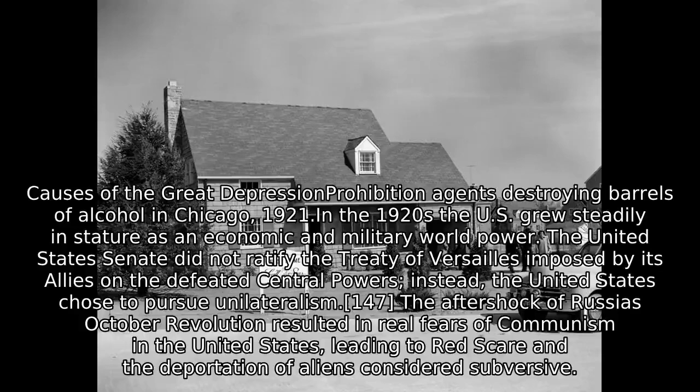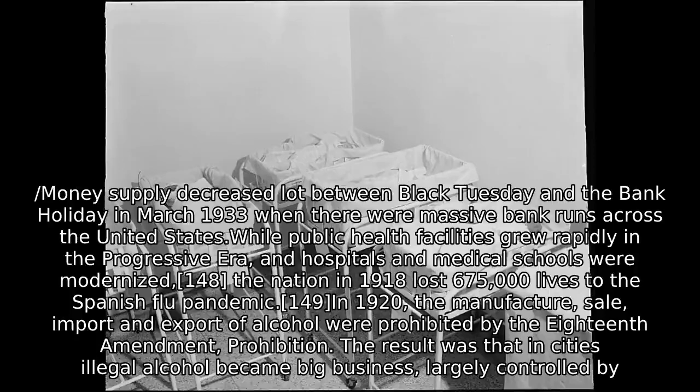In the 1920s the US grew steadily in stature as an economic and military world power. The United States Senate did not ratify the Treaty of Versailles, and instead the United States chose to pursue unilateralism. The aftershock of Russia's October Revolution resulted in real fears of Communism in the United States, leading to the Red Scare and deportation of aliens considered subversive. Public health facilities grew rapidly in the Progressive Era, and hospitals and medical schools were modernized.